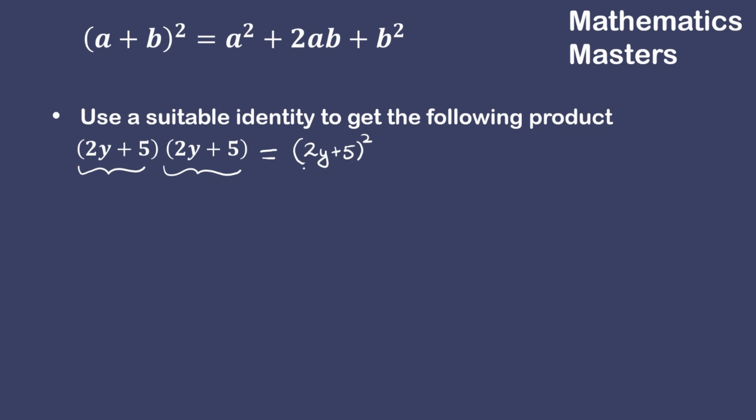Now let us compare 2y plus 5 the whole square with the identity we have just learned. According to the identity, the square of the sum of two terms is the square of the first term plus two times first term into second term plus the square of the second term.